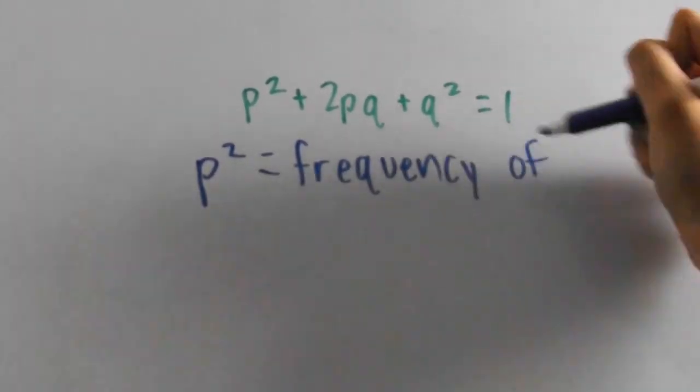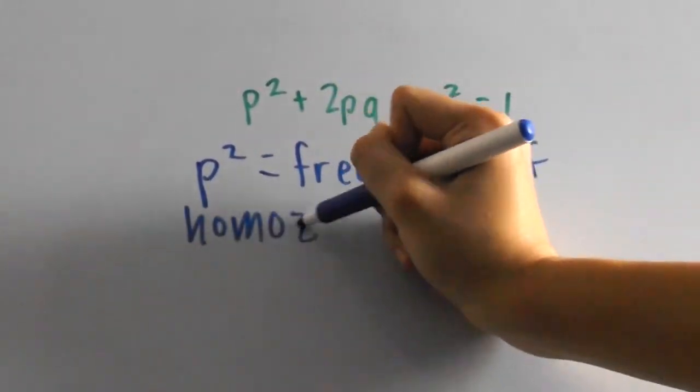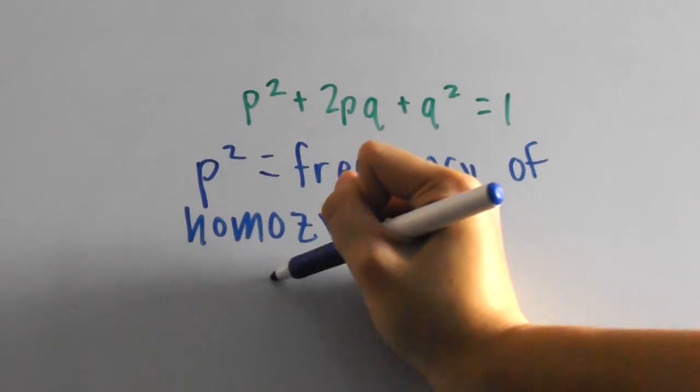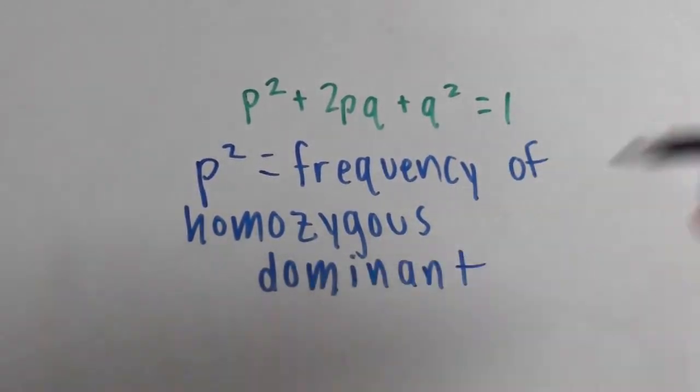p squared stands for the frequency of those who are homozygous for the dominant allele, meaning that the individual has two dominant alleles.